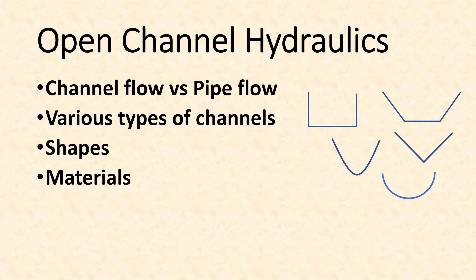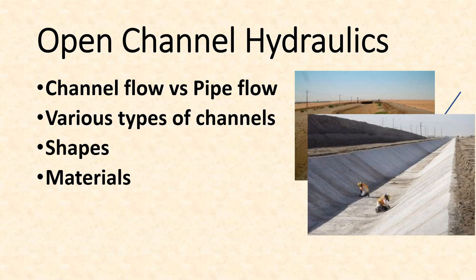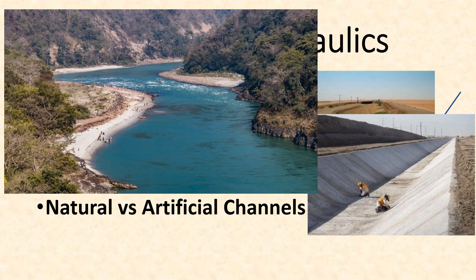Materials of a channel may be different. It may be an earth channel like this, or we may also provide concrete lining like this so that water loss is minimized and it is also protected against erosion. There may be natural channel, natural channel basically means a river or some natural stream, and artificial channel is what we build.